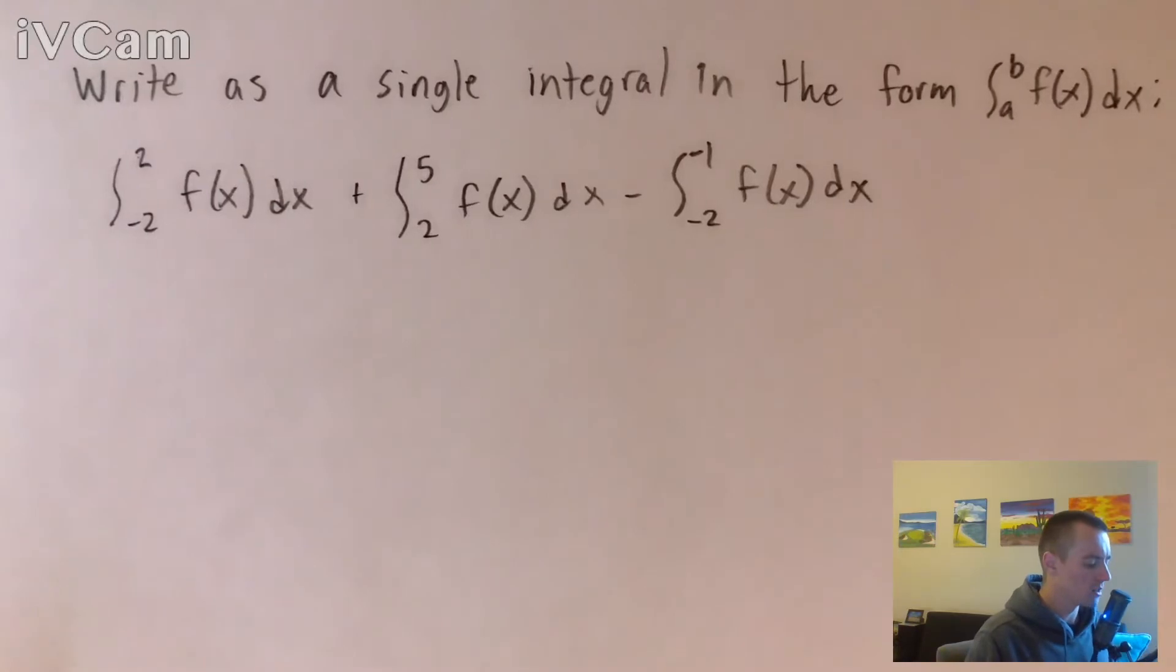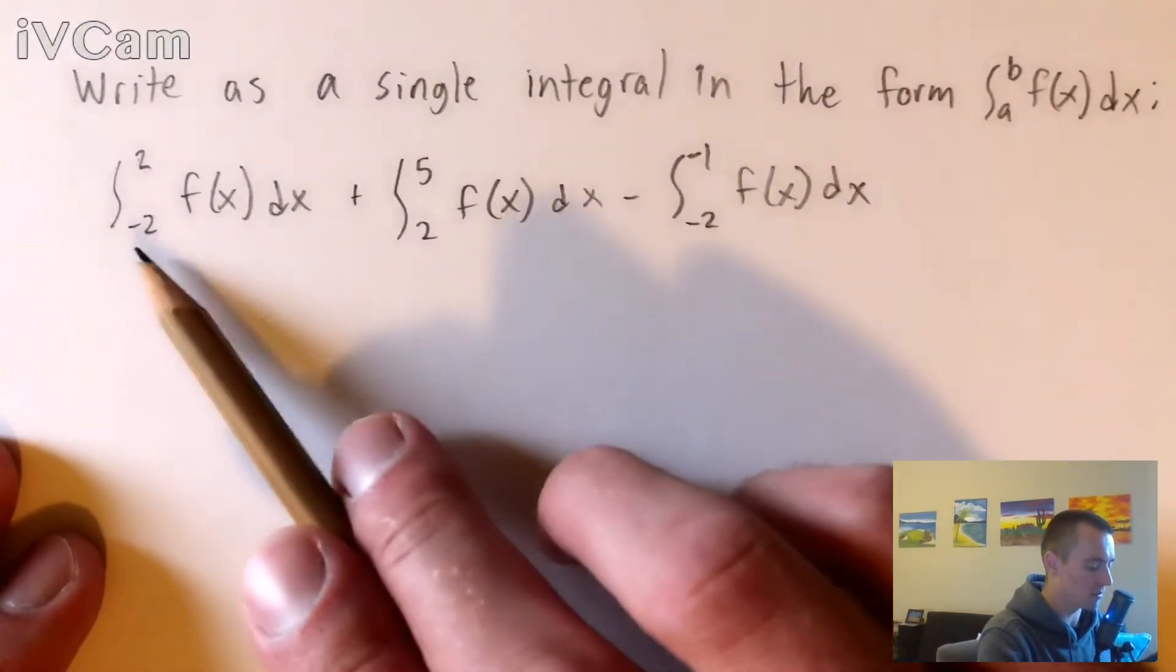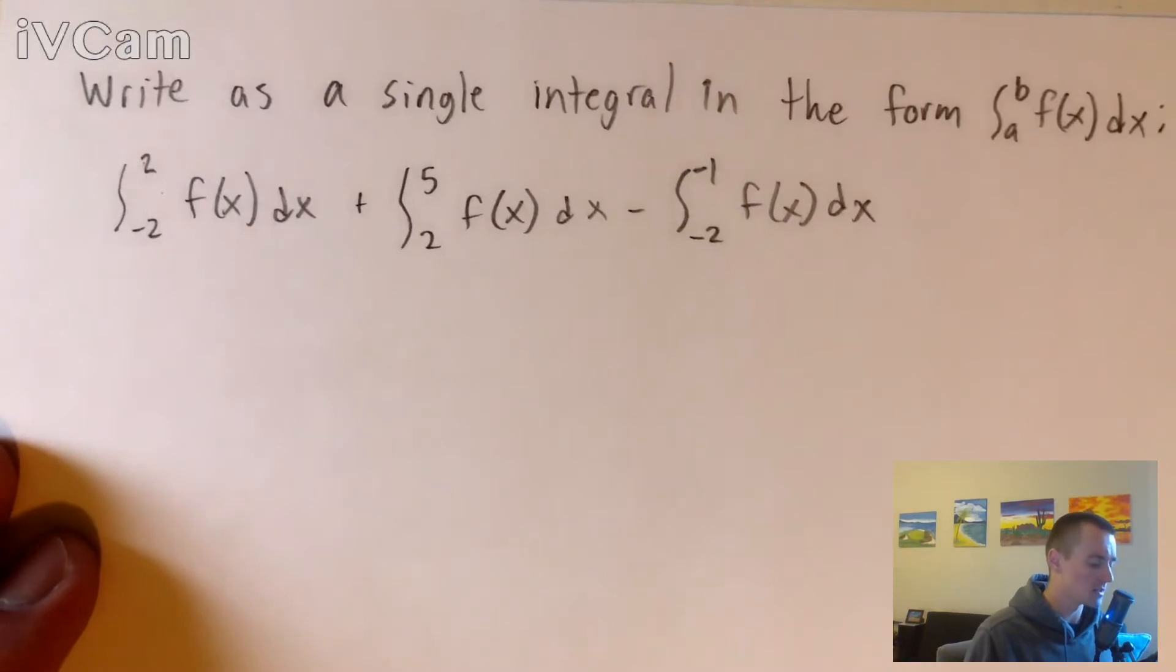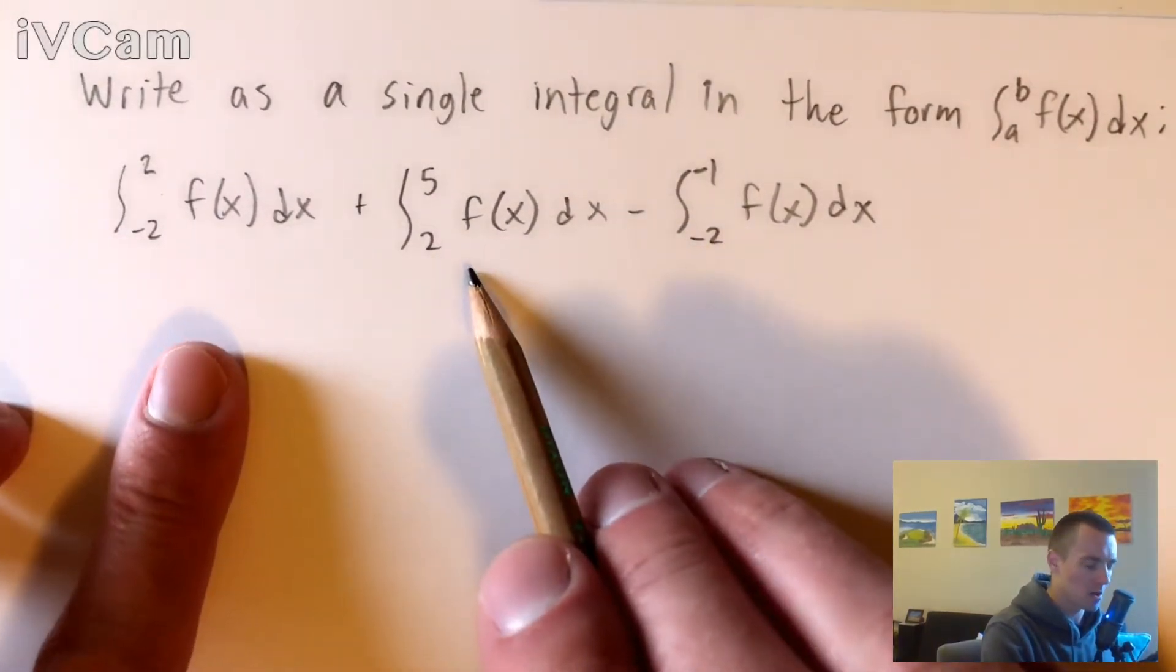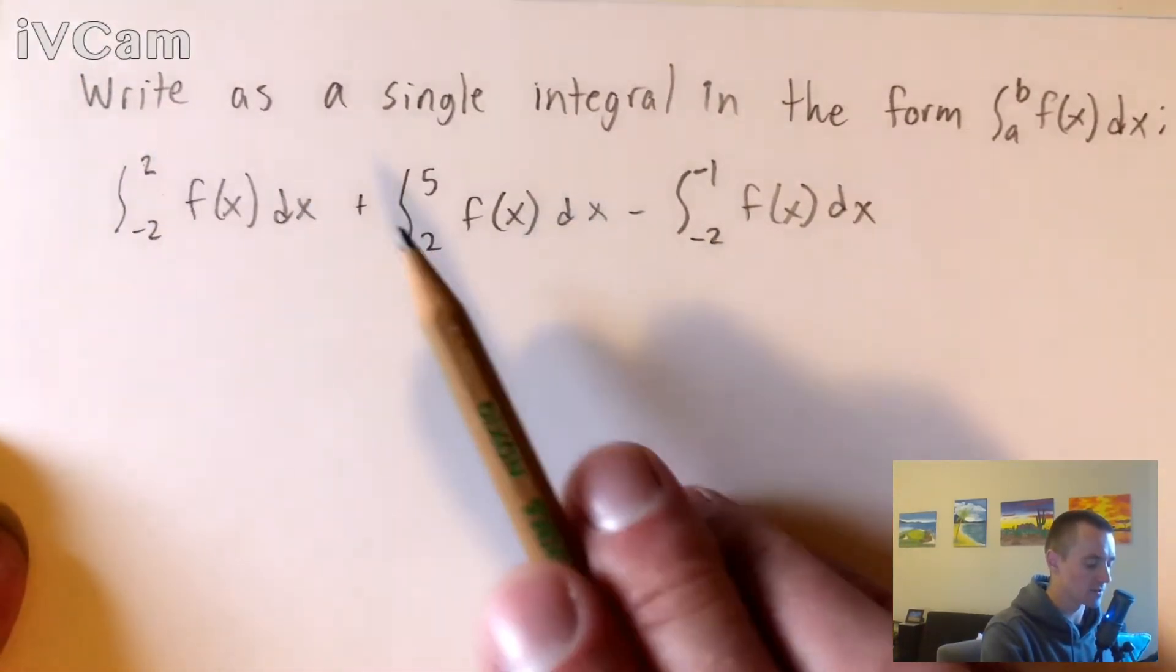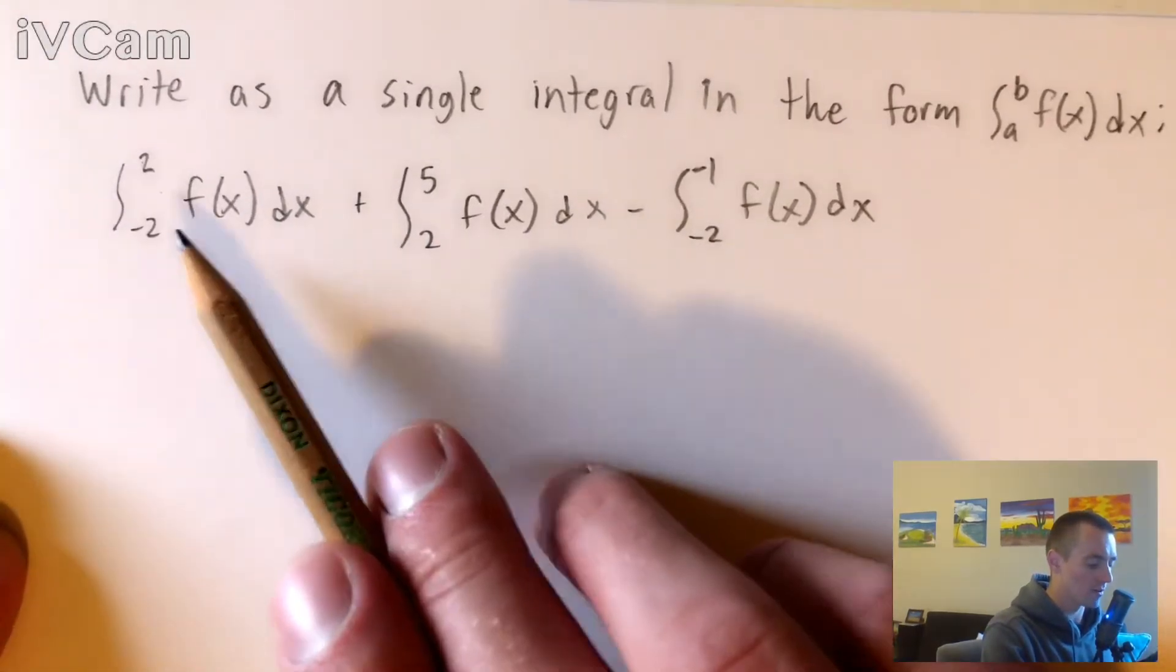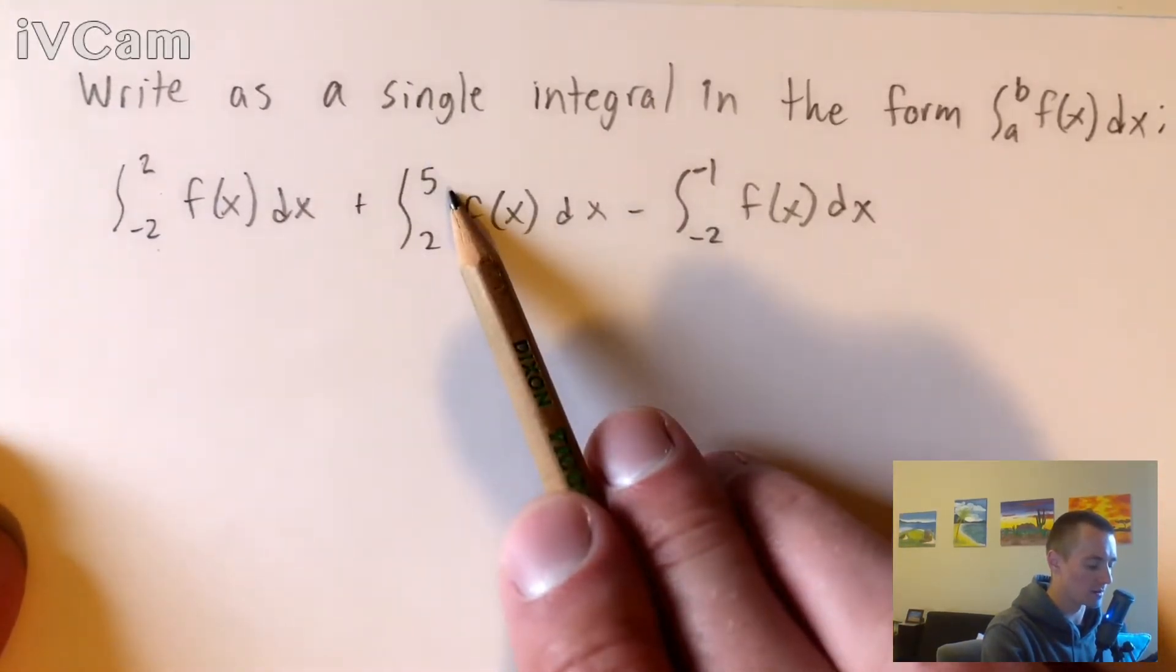First, let's look at these first two integrals: the integral of f(x)dx from -2 to 2 and the integral of f(x)dx from 2 to 5. One of those limit properties says that if we have these two integrals being added together where the upper bound of one integral is the same as the lower bound of the other, we can combine those into one single integral where the lower bound is the lower bound of the first one and the upper bound is the upper bound of the second one.